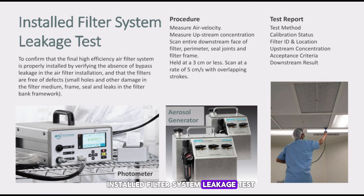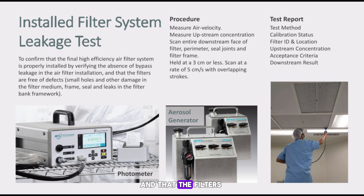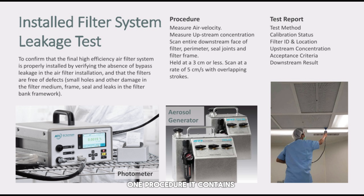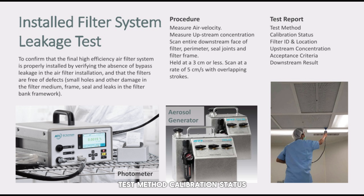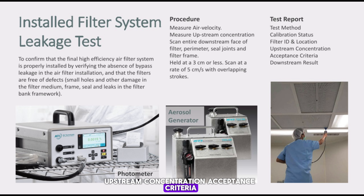Installed Filter System Leakage Test — Purpose: to confirm that the final high-efficiency air filter system is properly installed by verifying the absence of bypass leakage in the air filter installation, and that filters are free of defects like small holes and damage in the filter medium, frame, seal, and filter bank framework. Procedure: measure air velocity, measure upstream concentration, scan the entire downstream face of filter including perimeter, seal joints, and filter frame, held at 3 cm or less, scanning at a rate of 5 cm per second with overlapping strokes. Test report contains: test method, calibration status, filter ID and location, upstream concentration, acceptance criteria, and downstream result.